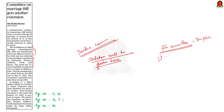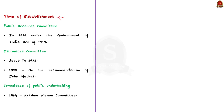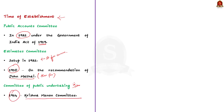The financial committee comprises three committees: the Public Accounts Committee, the Committee on Estimates, and the Committee on Public Undertakings. In our prelims examination, questions can be asked from these areas: when each was established, how members are selected, and the functions of the committee. The Public Accounts Committee was set up in 1921 under the Government of India Act 1919. The Estimate Committee traces back to the Standing Financial Committee set up in 1921, and after independence was established in 1950 on the recommendation of John Mathai, the then Finance Minister. The Committee on Public Undertakings was established in 1964 on the recommendation of the Christian Menon Committee.